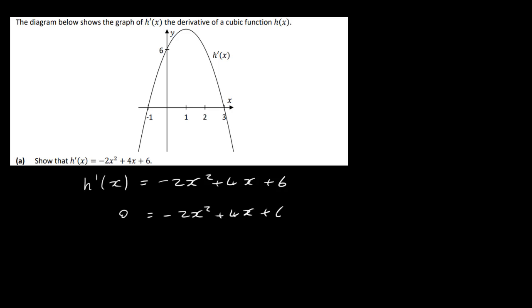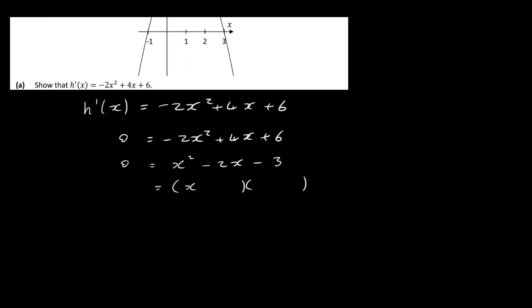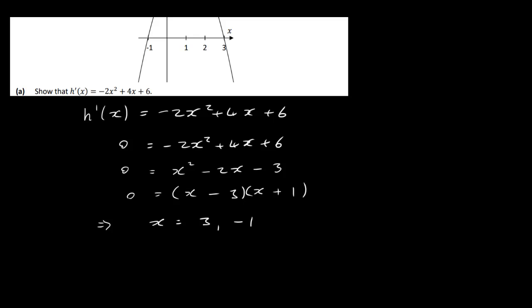So if I take 0 equals minus 2x squared plus 4x plus 6, and divide across by minus 2, I get 0 equals x squared minus 2x minus 3. Factorizing this gives (x minus 3)(x plus 1), so x equals 3 and x equals minus 1. And our two roots from the graph are minus 1 and 3, so this is confirmed from the graph.